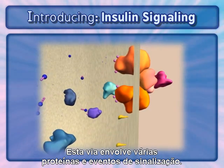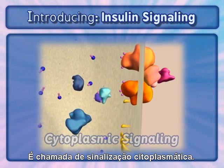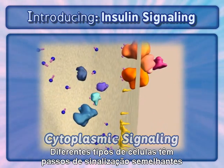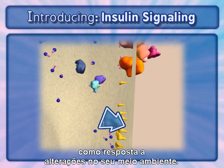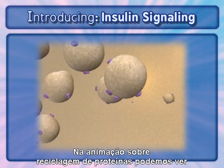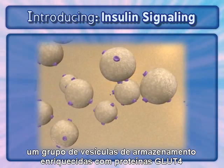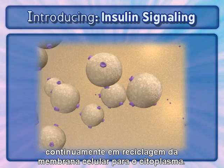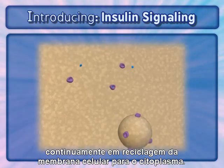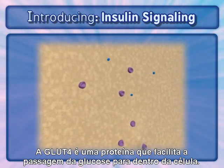This pathway involves multiple proteins and signaling events, and is termed cytoplasmic signaling. Different types of cells perform similar signaling steps in response to changes in their environment. In the protein recycling animation, we see a group of storage vesicles enriched with GLUT4 proteins continuously recycling from the cell membrane to an inactive location in the cytosol. GLUT4 is a protein that facilitates the movement of glucose into the cell.